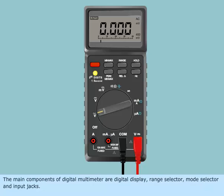The main components of digital multimeter are digital display, range selector, mode selector and input jacks.